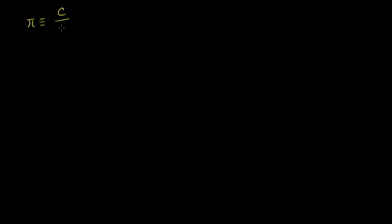Pi is defined as the ratio of the circumference of a circle to its diameter, which is the same thing as the ratio of the circumference of the circle to 2 times the radius.